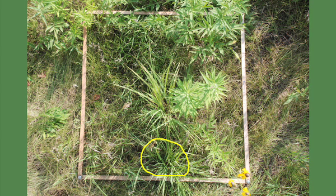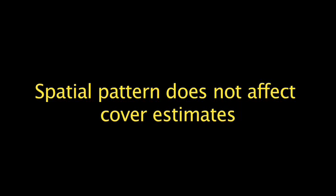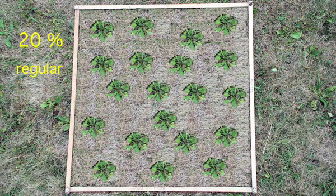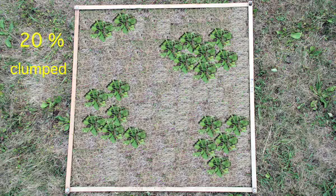Here is an example of big bluestem and goldenrod overlapping in the quadrat. Note that the spatial pattern of plants does not affect the estimate of cover. Plots with 20% cover of plants in a random arrangement, a regular arrangement, or a clumped arrangement, would all have the same percent cover value.